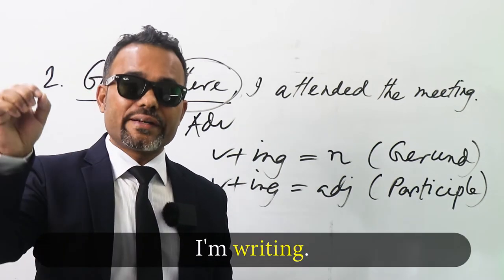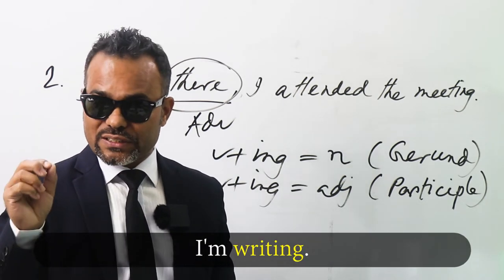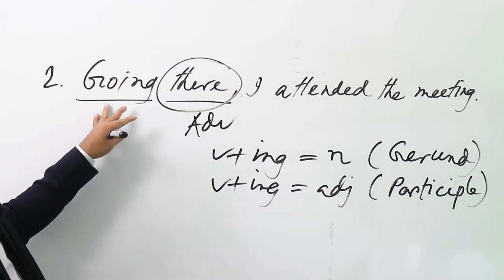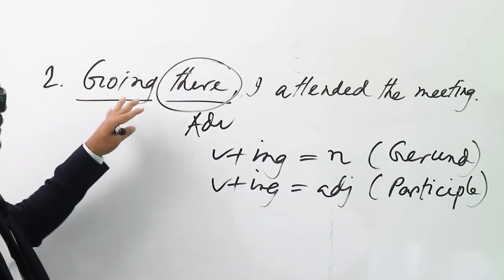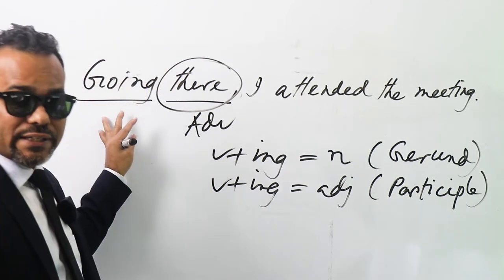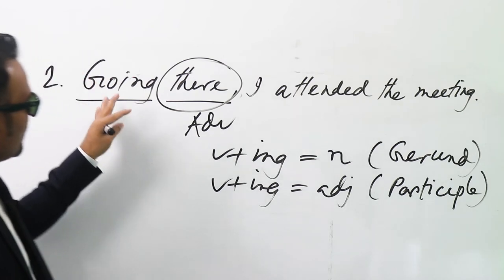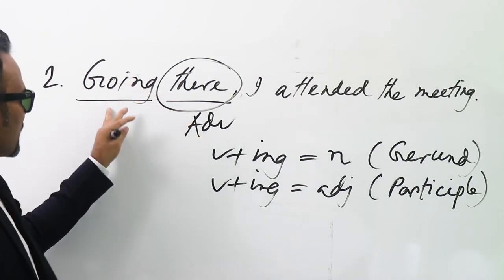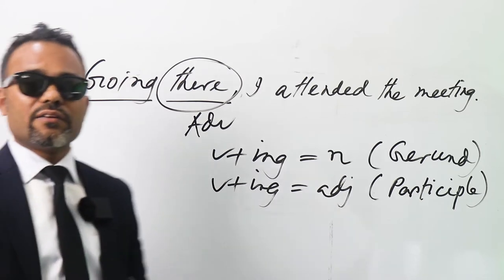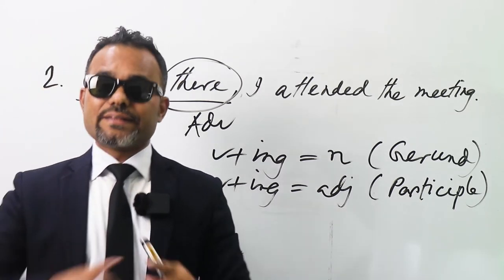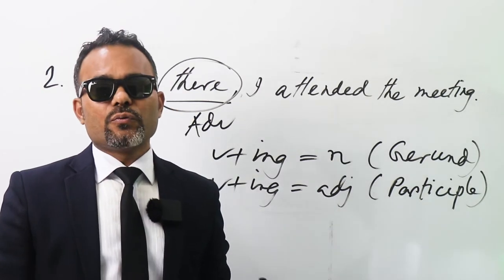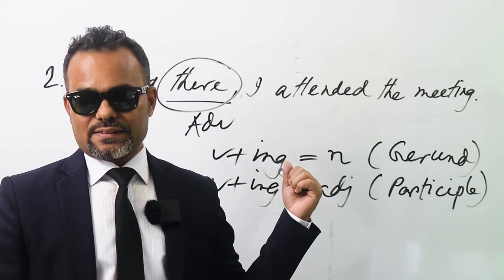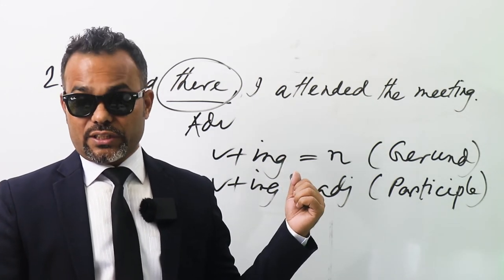Like 'I'm writing' or 'I'm writing here' — this is present participle. So 'going' here is also acting like a verb. 'There' is an adverb, and an adverb can modify a verb. This way also, we can understand that this is not a gerund.